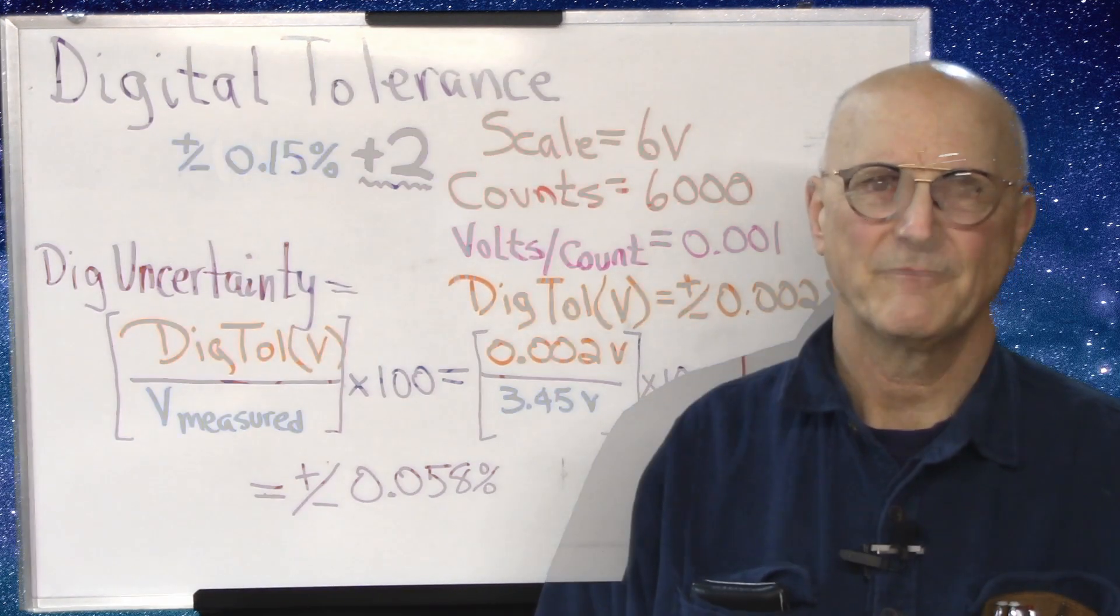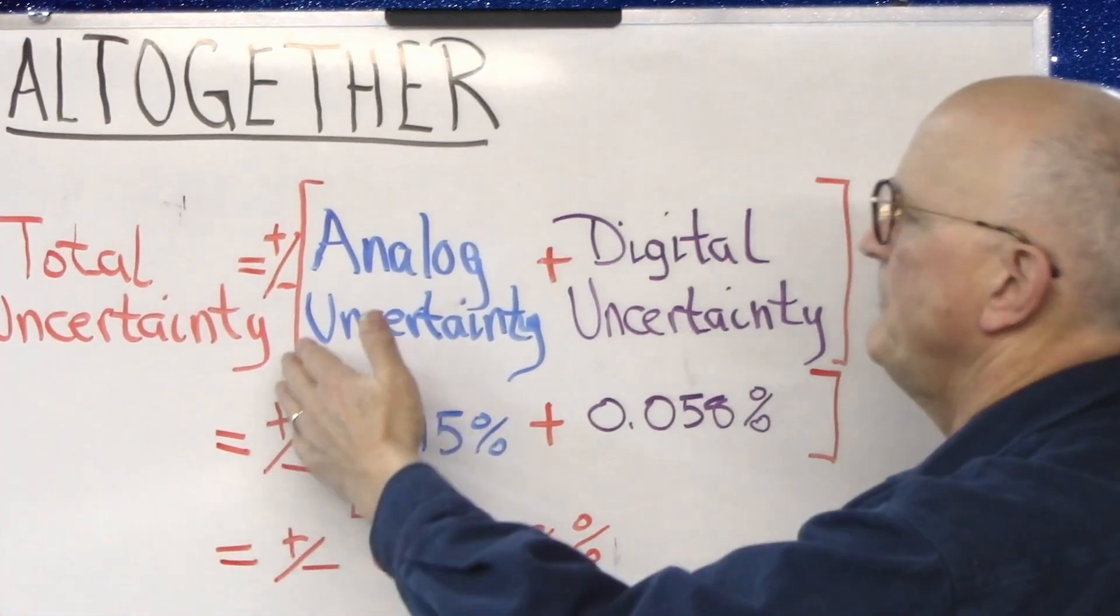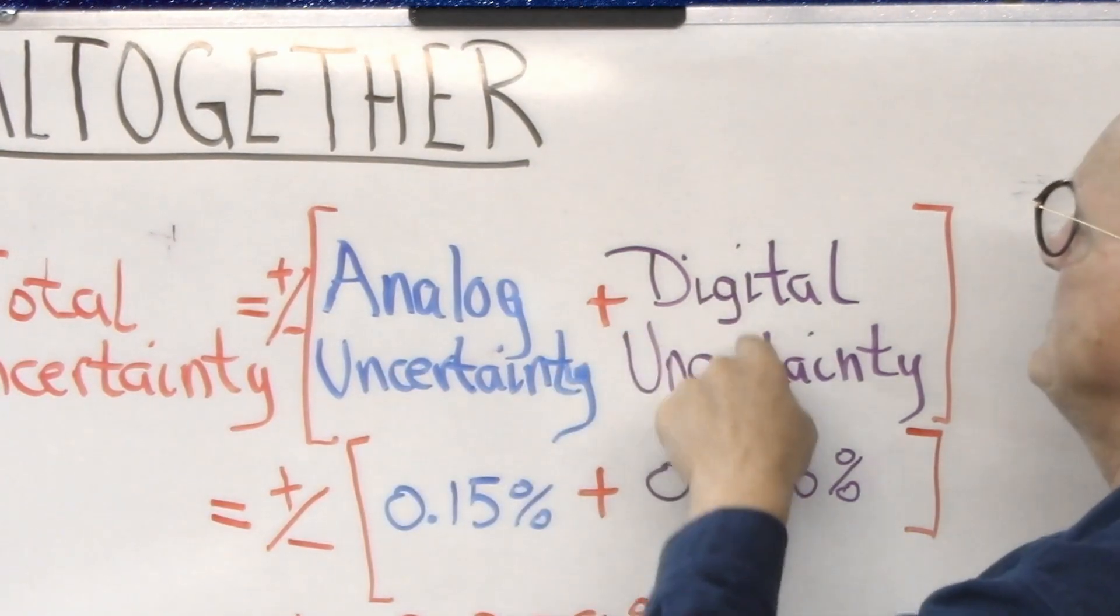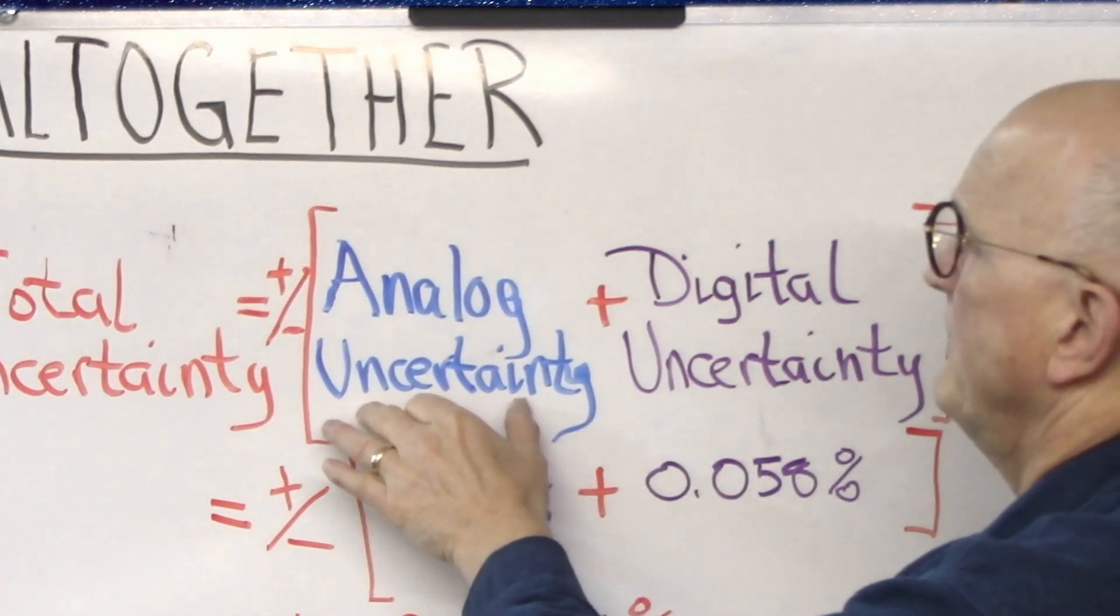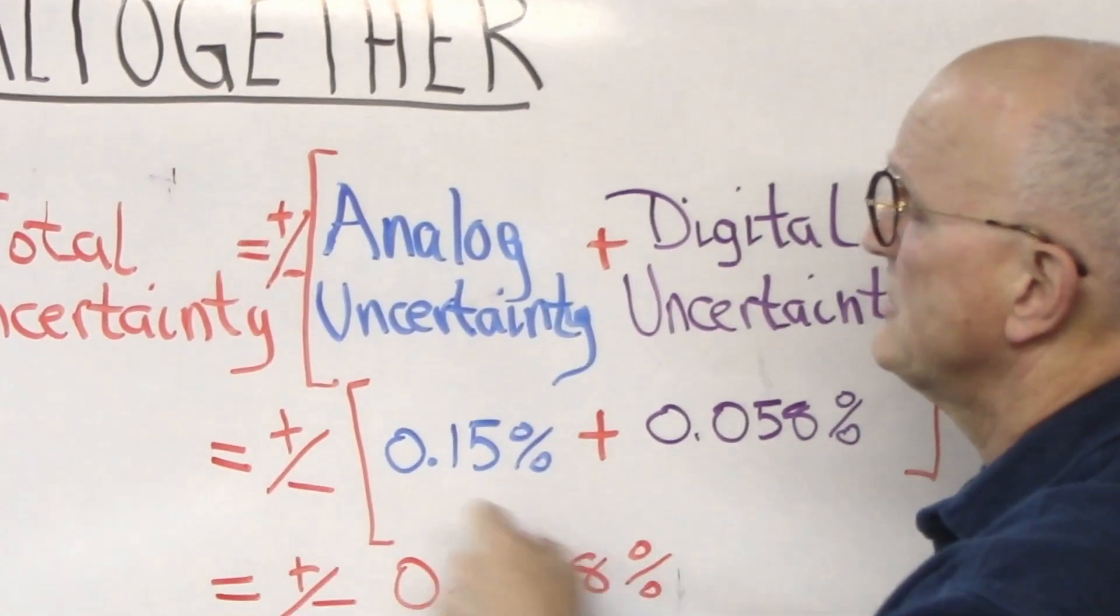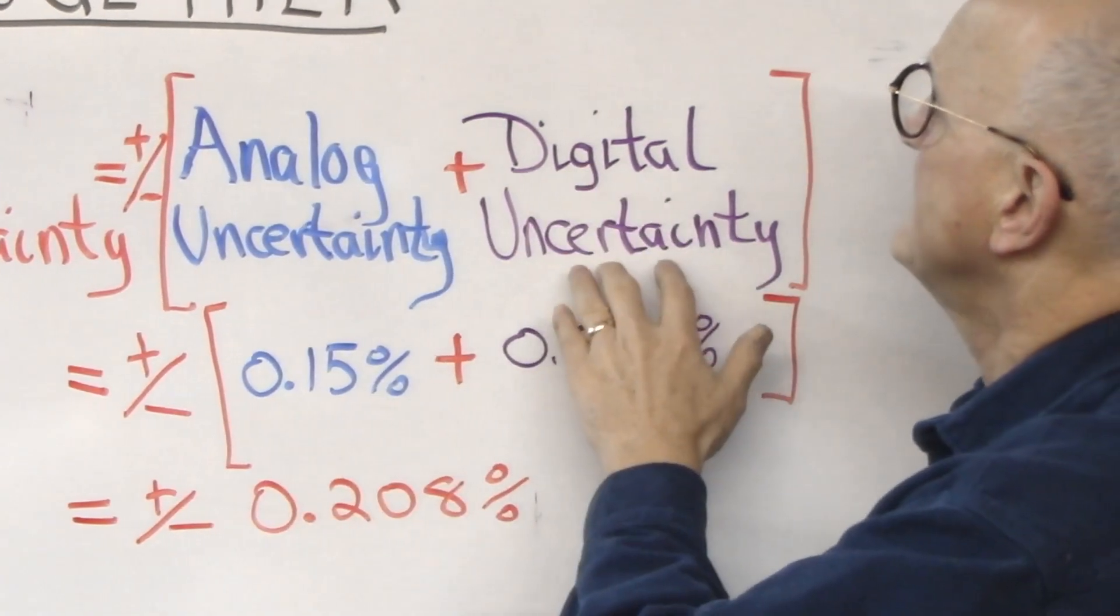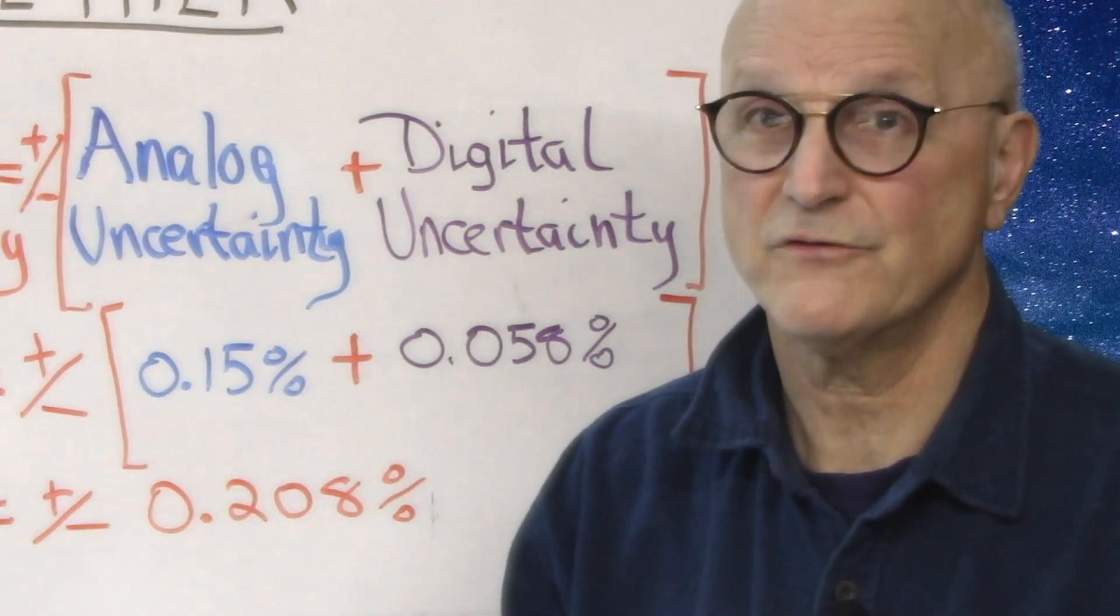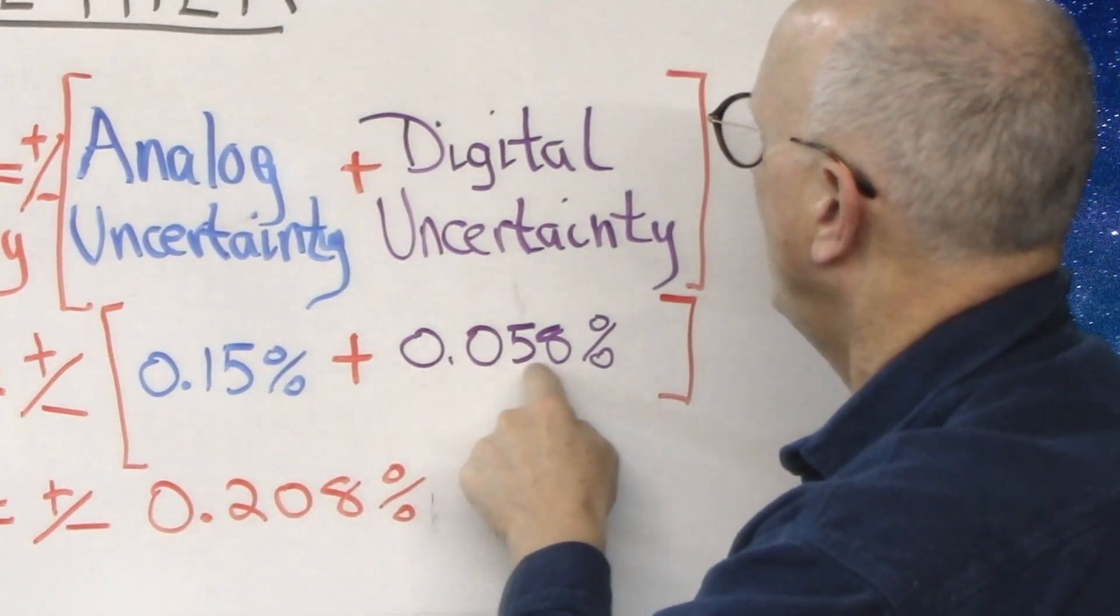So let's put this all together. The total uncertainty of any given measurement is going to be equal to the sum of the analog uncertainty and the digital uncertainty for the specific measurement. So the data from the spec sheet tells us that the analog uncertainty for DC voltage measurements is 0.15%. And we just calculated the digital uncertainty when measuring a 3.45-volt signal on the 6-volt scale is plus or minus 0.058%.